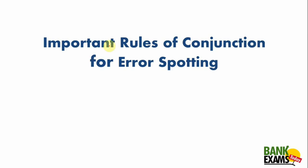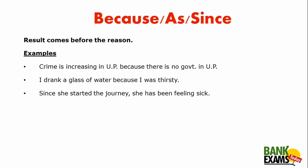Basically, conjunctions are a part of a sentence that combines sentences into a single entity or single thing. In this video we are going to learn 10 basic conjunctions that will help you attempt error spotting questions, phrase replacement, and other English grammar questions. We are starting with 'because', 'as', and 'since'.